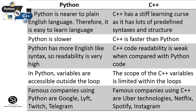C++ is faster than Python. Python has more English-like syntax and higher readability. C++ has weaker readability compared to Python. Python can access variables outside the loop, while C++ can only access variables within the loop. Python is used by companies like Google, Lift, Switch, and Telegram. C++ is used by companies like Uber Technologies, Netflix, Spotify, and Instagram.